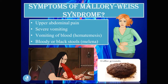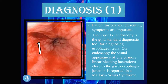Symptoms of Mallory-Weiss syndrome include: upper abdominal pain, severe vomiting, vomiting of blood (hematemesis), and bloody or black stools (melena). For diagnosis, patient history is important. Patients typically present with hematemesis, upper abdominal pain, and melena, and may have a history of severe vomiting, retching, an eating disorder like bulimia, or alcoholic binge drinking.